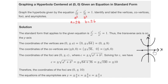The co-vertices have y-coordinate zero, so they are at (±6, 0). Now we use the formula c² = a² + b² to find c: 64 + 36 = 100, so c = ±10. The foci are on the y-axis, so the x-coordinate is zero and the foci are at (0, ±10). The asymptotes are y = ±(a/b)x = ±(8/6)x, which reduces to y = ±(4/3)x.